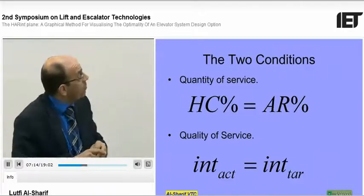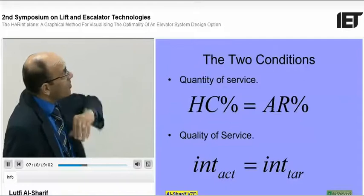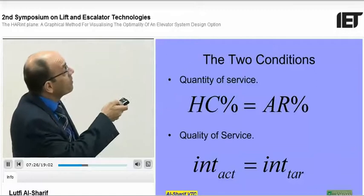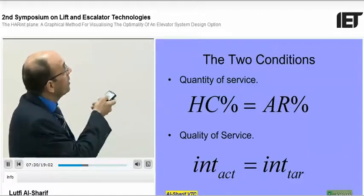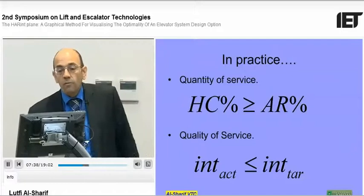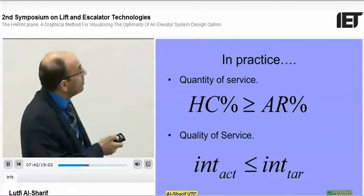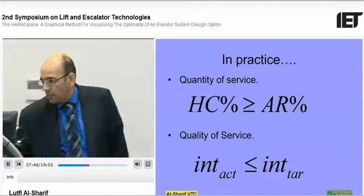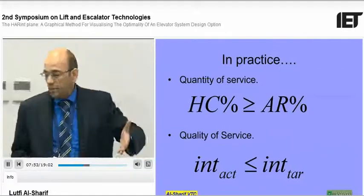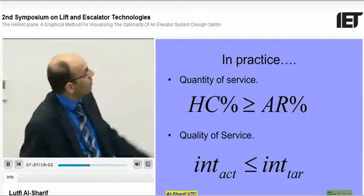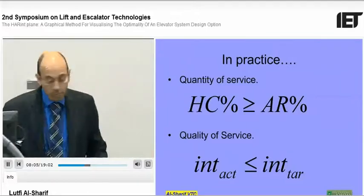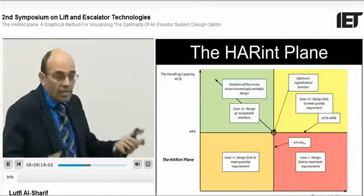Introducing handling capacity: the arrival rate is the demand — what we expect passengers to arrive at — and handling capacity is expressed as a percentage of building population in the busiest five minutes. Ideally we'd like those to be equal to avoid a wasteful design. Similarly, we want the actual interval to equal the target interval. In practice we can't achieve it exactly, so as long as handling capacity is greater than or equal to arrival rate, that's fine. If HC is much more than AR, it's a wasteful design. If actual interval is much less than target interval, again, wasteful design.